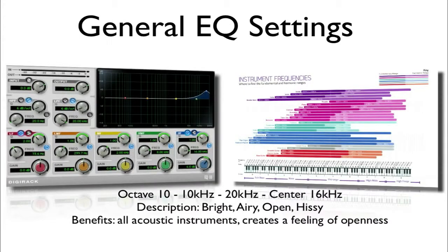And finally, Octave 10, 10 kHz to 20 kHz with a center point of 16 kHz, is going to sound bright, airy, open, and a little hissy. This will benefit nearly all acoustic instruments — it creates a feeling of openness and can really bring acoustic instruments alive.